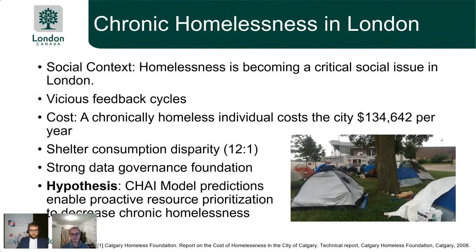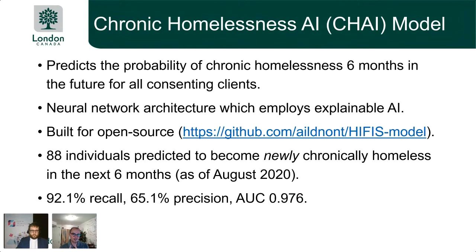The hypothesis is that our CHI model — our chronic homelessness AI model — would enable proactive resource prioritization to decrease chronic homelessness in our city. If we could predict future chronic homelessness, we can prioritize resources earlier. The CHI model predicts the probability of chronic homelessness six months into the future for all consenting clients in the shelter system.